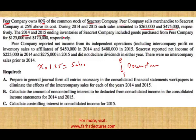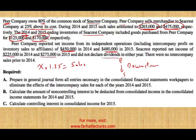The 2014 and 2015 ending inventory of S Company included goods purchased from P Company for 125,000 and 170,000. Of the 265,000 sold in 2014, 125,000 remained; of the 475,000 in 2015, 170,000 remained. P Company reported net income including intercompany profit of 450,000 in 2014 and 480,000 in 2015. S reported net income of 225,000 in 2014 and 275,000 in 2015, declared no cash dividends, and there are no intercompany sales prior to 2014.